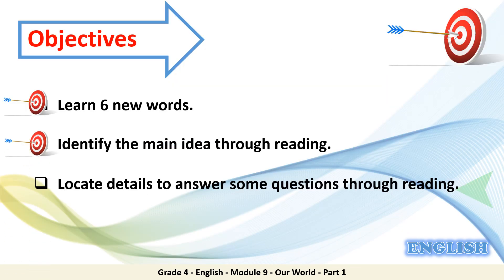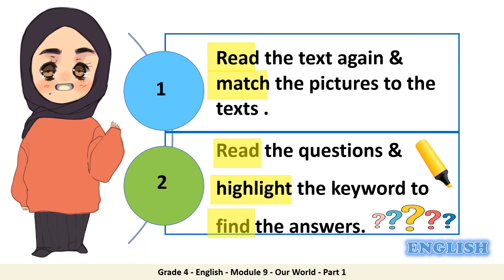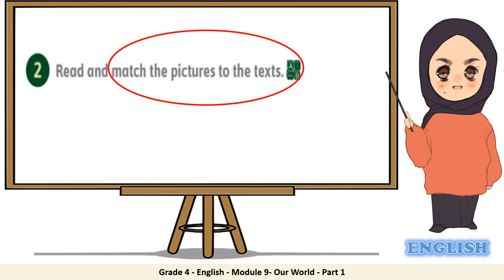Now you can easily move to the third objective: locate details to answer some questions through reading. First, read the text again and match the pictures to the texts. Second, read the questions and highlight the keywords to find the answers. Let's get started!